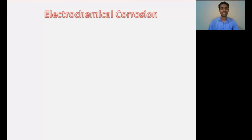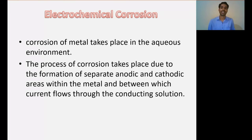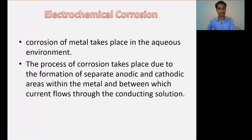The next type is electrochemical corrosion, also called wet corrosion. This type of corrosion takes place in an aqueous environment, meaning the metal is in contact with water or moisture. In this process, separate anodic and cathodic areas are formed on the metal surface in the presence of an electrolyte solution — an aqueous environment that contains free ions to transfer charge. Part of the metal behaves as an anode and part behaves as a cathode.